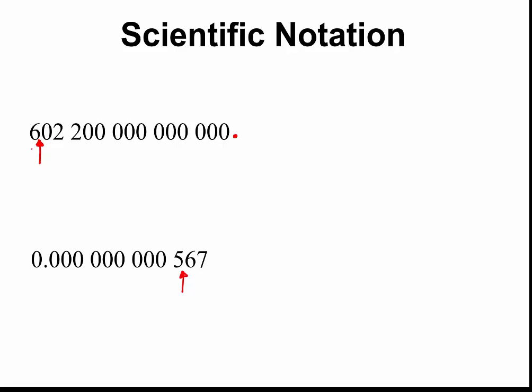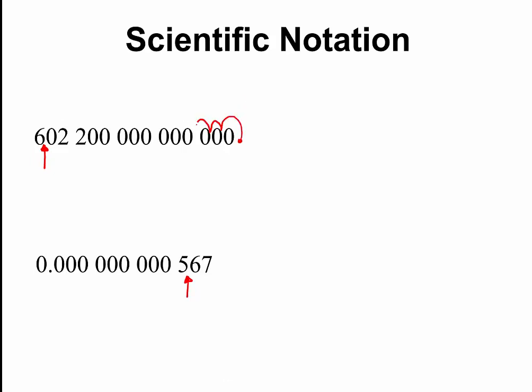To do that, we need to jump over many numbers and zeros, and we need to count them. For the first number, we jump over 14 positions. So this number becomes 6.022, because the decimal point is now behind the 6, times 10 to the power of 14. The 10 is the multiplier and the exponent is 14.